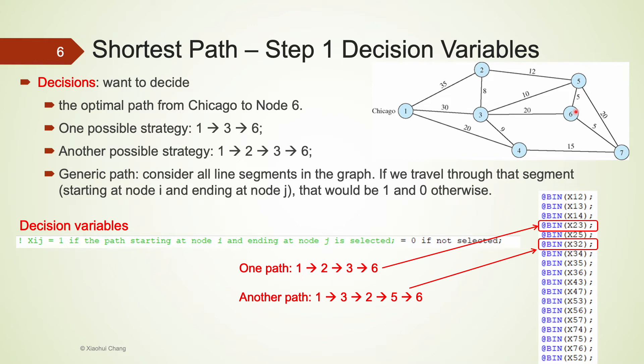Another interesting observation you may have noticed is we don't consider any line segments that end at 1. This is because Chicago, node 1, is the origin of the path. If the path includes a line segment that ends with 1, that means after leaving Chicago, we come back to Chicago for a second time. This is definitely not going to be one of the shorter paths, so we can easily rule out this route.